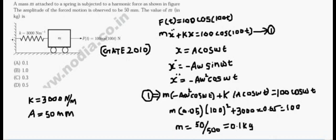The spring is attached to the wall, then apply the harmonic force. F(t) equals 100 cos(100t).